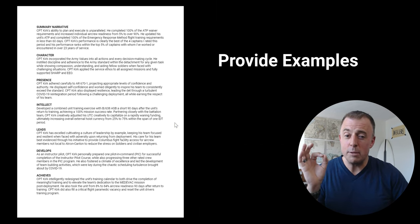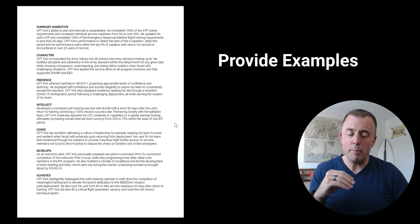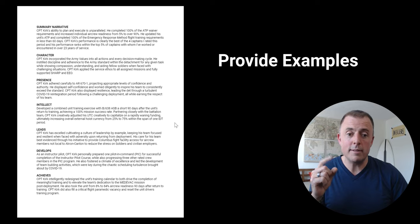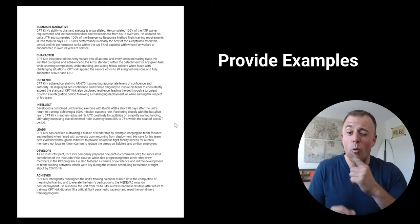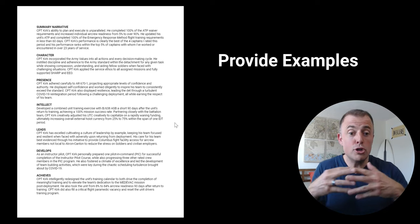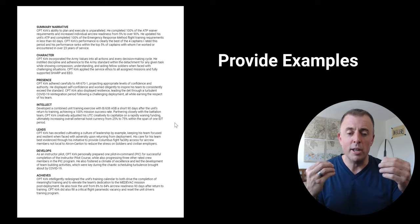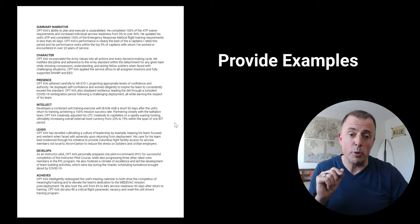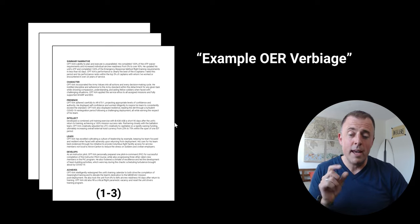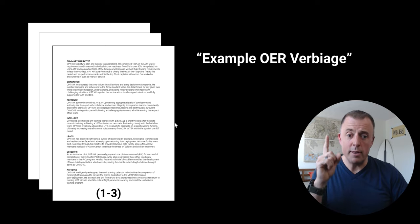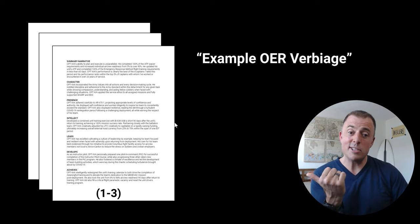Now we need to provide examples. I talked about this in my previous prompting basics videos — this is the sixth and culminating video, check the description below. On the left-hand side you see summary narrative, character, presence, intellect, leads, develops, achieves — this is one example of what each of those smooshed-together narratives should look like in terms of tone and style. We're going to provide three examples because I've spent much of my career logging this stuff, and I'll take three of the best ones. I titled the file 'example OER verbiage' — just make a mental note of that because when I upload these, I want the file name to make sense.